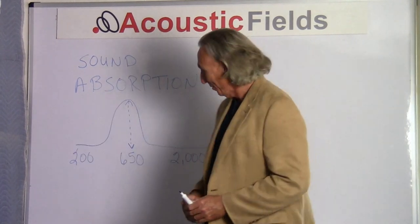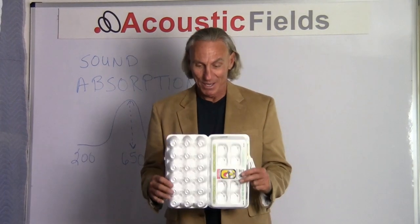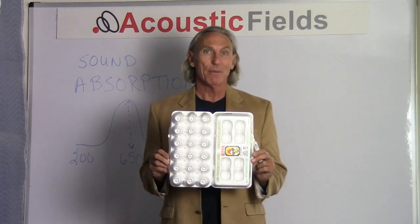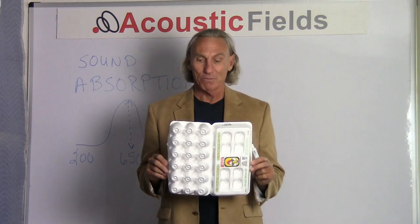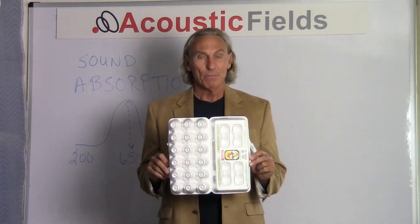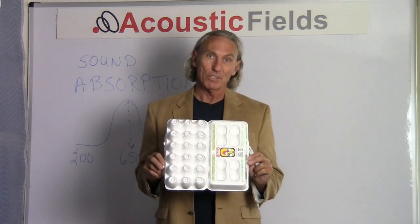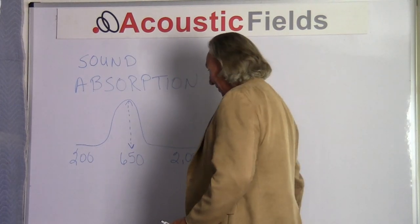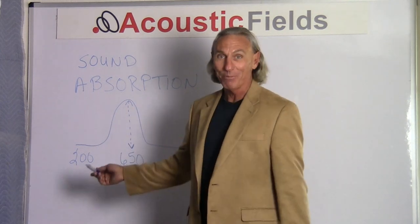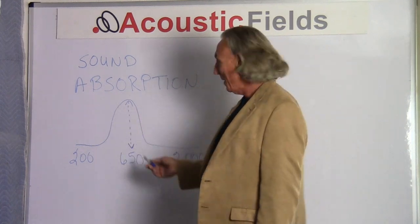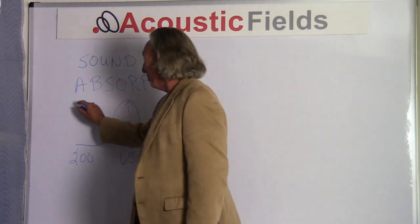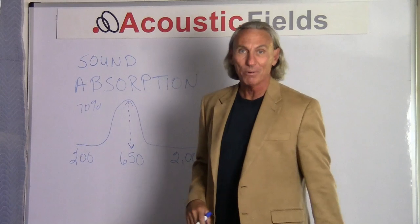Let's examine absorption first with the egg crate, because logically it's a good start — the material appears to have some sound absorbing properties just by touch and feel. This is a styrofoam egg carton; a lot of them are cardboard or paper-based products, but we can use this as an example. I went on the internet and found some absorption curves for egg crates. We have a 200 Hz start point, a 650 Hz peak, and then leveling off around 2000 Hz. The absorption coefficient was about 70% at the peak around 650 Hz.